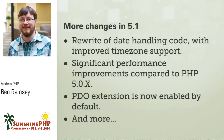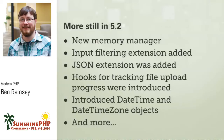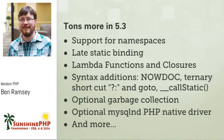PHP 5.1 came out with lots of new changes. PHP 5.2 came out later with more significant improvements — we got the JSON extension added to the language. PHP 5.3 was probably the next most significant release since 5.0 in terms of how we develop applications today, because it introduced support for namespaces and late static binding, lambda functions and closures. These all now became part of the language.